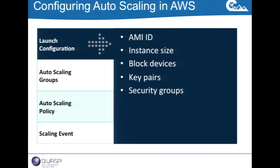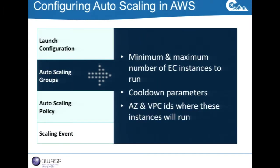Taking a closer look at the launch configuration: the most basic element is the AMI ID — the machine image you're starting from. You define instance size, which block devices need to be attached, key pairs for identity, and security groups. Once the instance is spinning up, it needs to know which auto-scaling group it belongs to. In the auto-scaling group configuration, you're configuring things like the minimum and maximum number of EC2 instances — for example, never fewer than four instances at any given moment.